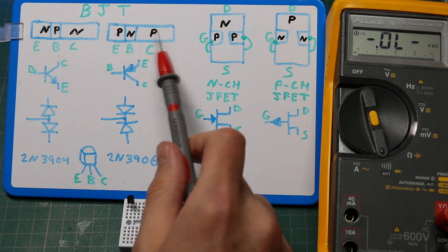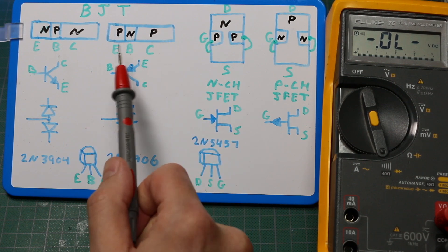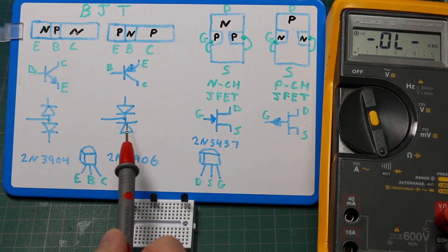Now if we look at this for the PNP, all we do is we reverse the leads. So the n-type material, the cathode is going to be the base.